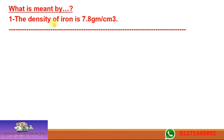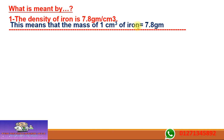What is meant by 'the density of iron is 7.8 grams per cubic centimeter'? This is like the define question but you must insert the number. The mass of one cubic centimeter of iron equals 7.8 grams.